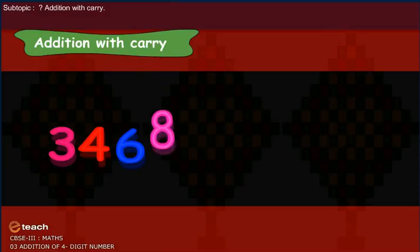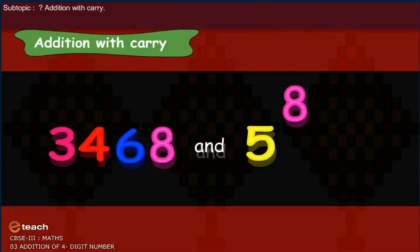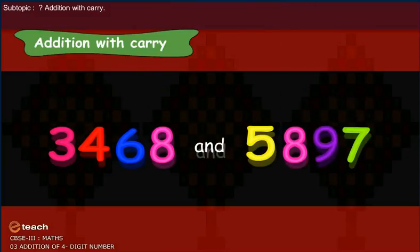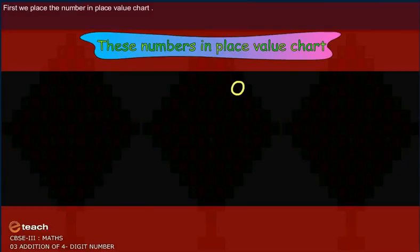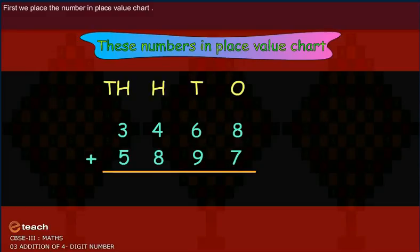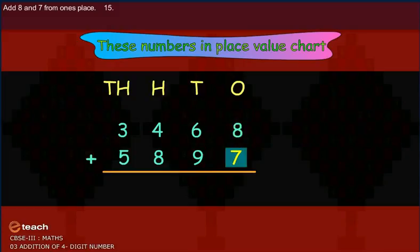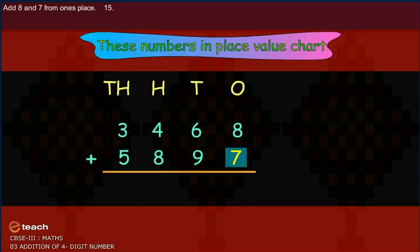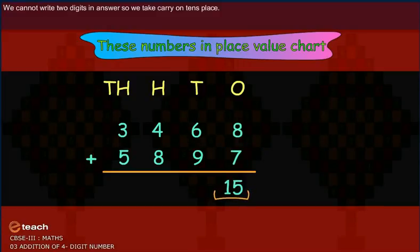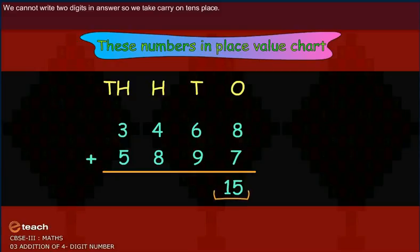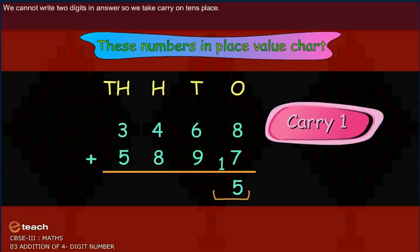Addition with carry. First, we place the number in place value chart. Add eight and seven from ones place. Fifteen. We cannot write two digits in answer, so we take carry on tens place.